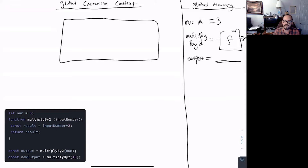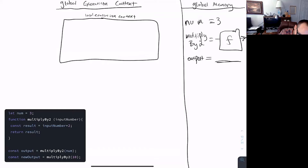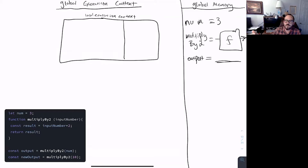A new execution context — we need a new execution context. Exactly. We need a place to run this functionality. We're running all our functionality in the global execution context, but now for this one individual function we need a place to run it on its own. So we're going to open up a local execution context, and inside it — just like our global execution context has global memory — we're going to have local memory, which is only useful inside this execution context.